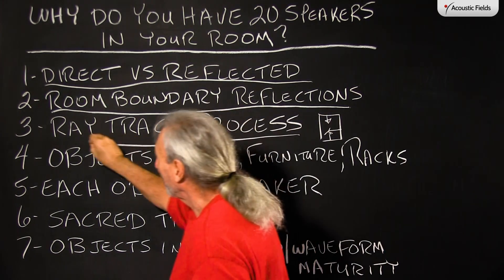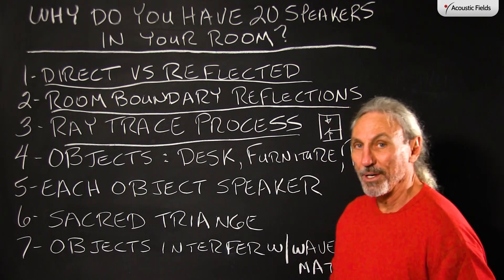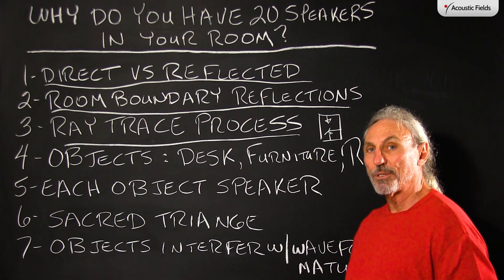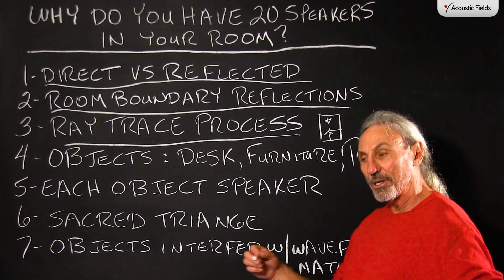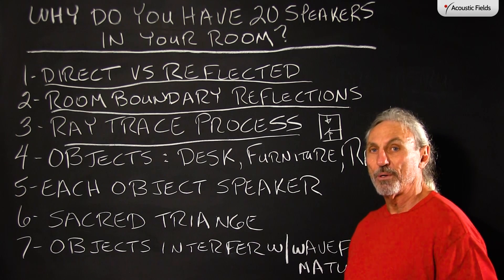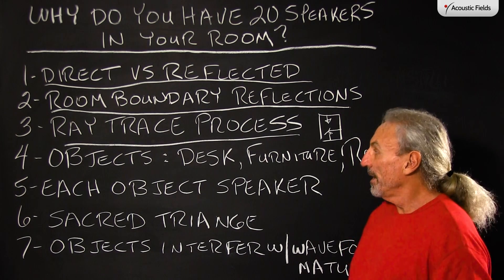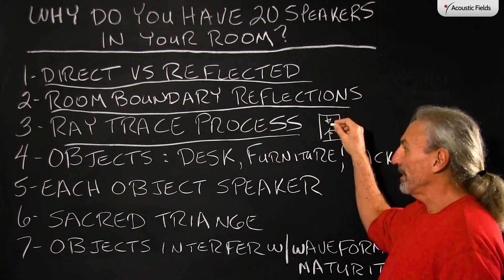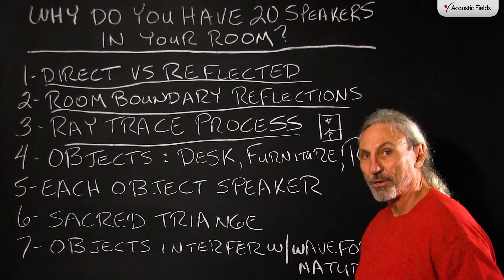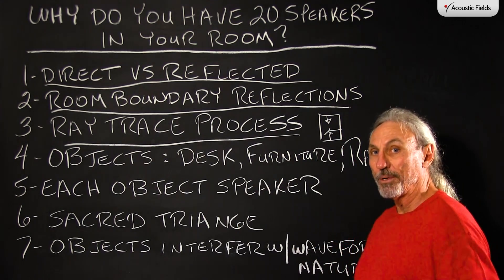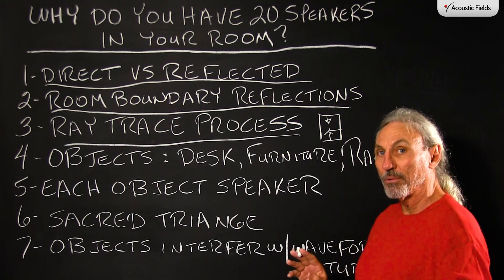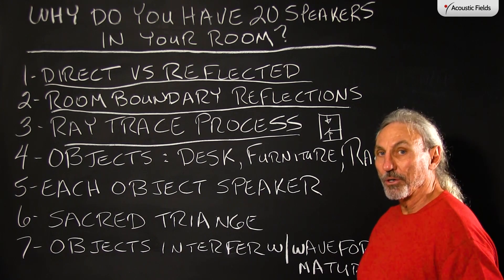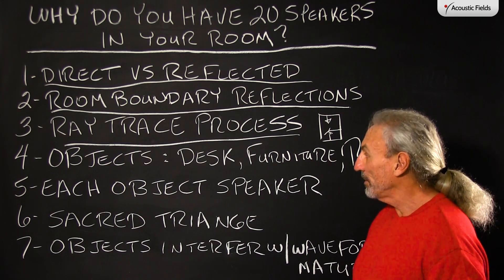We have a software program that we use when we manage reflections in rooms, especially in critical listening rooms and control rooms. What this ray trace program does is it takes energy from a source and it bounces it around in the room, showing us frequency and amplitude and places that are going to cause problems in terms of reflections.